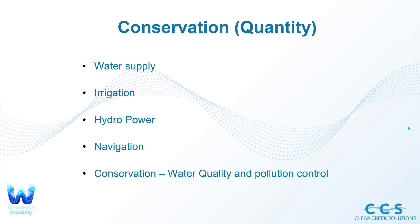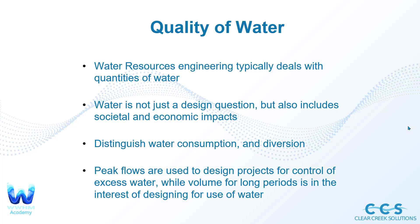How can we conserve water in terms of water quantity? One approach is conserving the water supply — making sure we know where all the water is going. This also involves irrigation, hydroelectric power, navigation, and of course conservation in terms of water quality and pollution control. Water resources engineering typically deals with the quantities of water: how much rainfall is occurring, what runoff is occurring from an area, and managing those quantities of water appropriately for societal benefit.